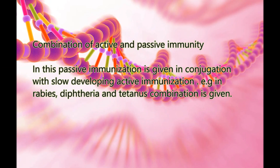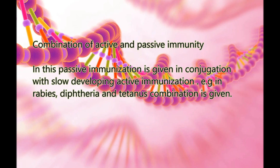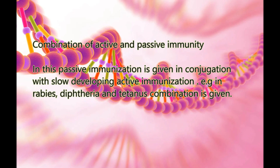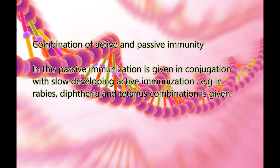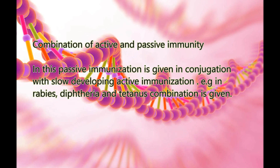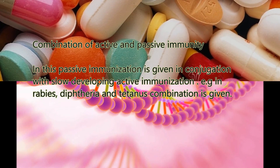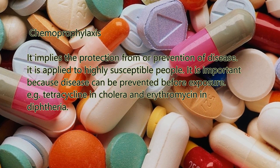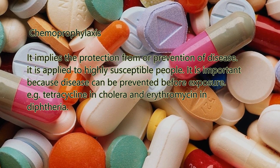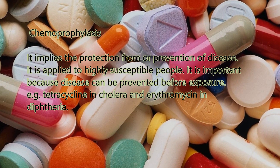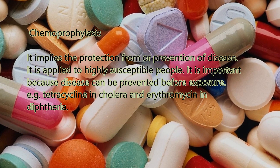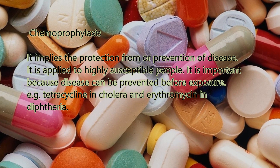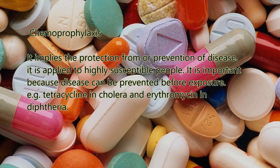Combination of active and passive immunity: Passive immunization is given in conjunction with slow-developing active immunization, as in rabies, diphtheria, and tetanus, where a combination of these two vaccines is given. Chemoprophylaxis: It means protection from or prevention of disease. It is applied to highly susceptible people and is important because disease can be prevented before exposure. Example: tetracycline is given in cholera and erythromycin in diphtheria.